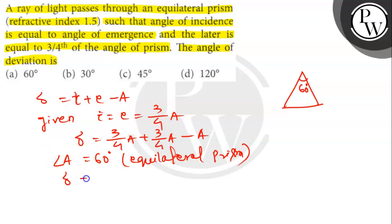So delta will be A/2, which is 60/2, 30 degrees. So delta is 30 degrees. Option B is the correct answer. Thank you.